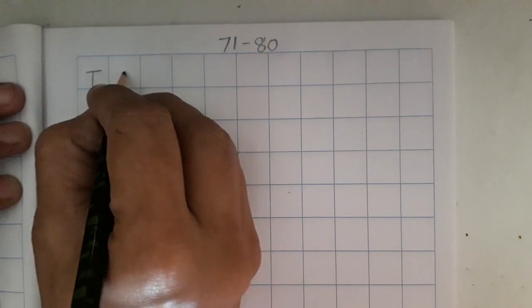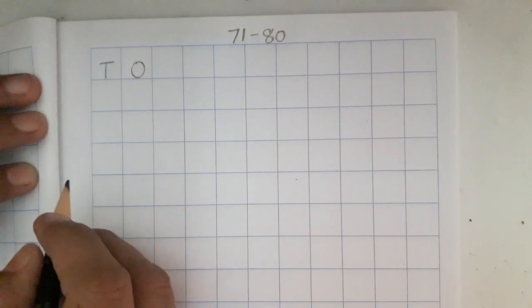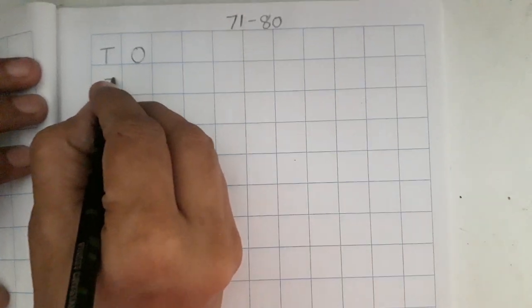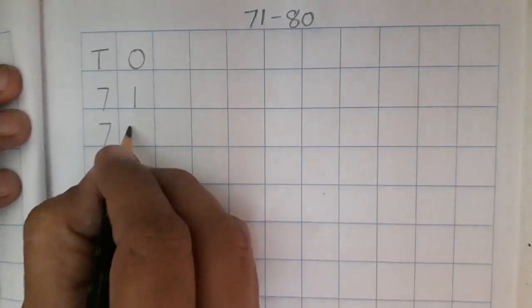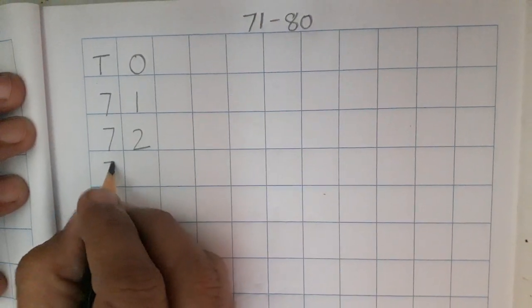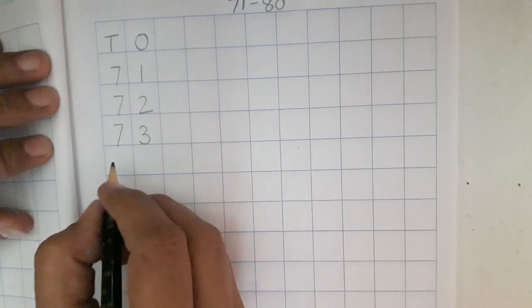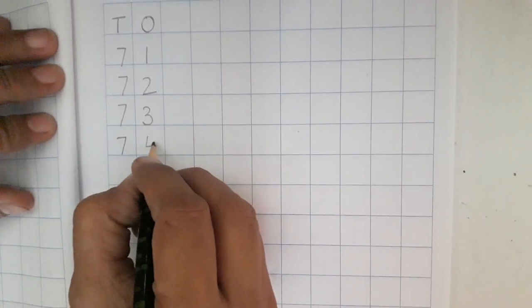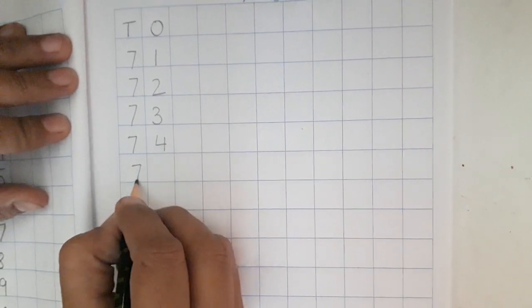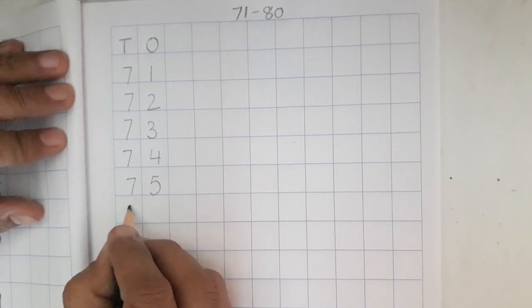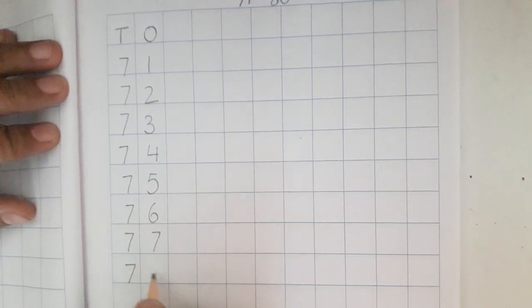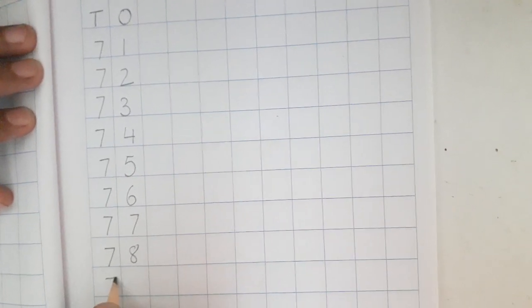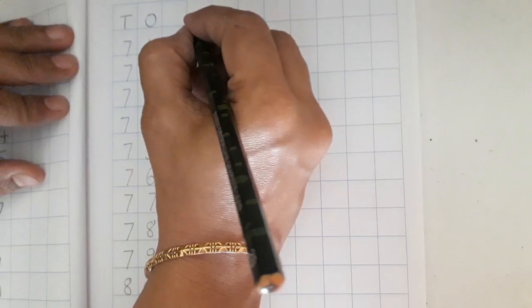Here we are going to write today's date. Now, first of all, before writing numbers we will write T and O. Now, I am writing. You will say with me: 71, 72, 73, 74, 75, 76, 77, 78, 79. And 80.